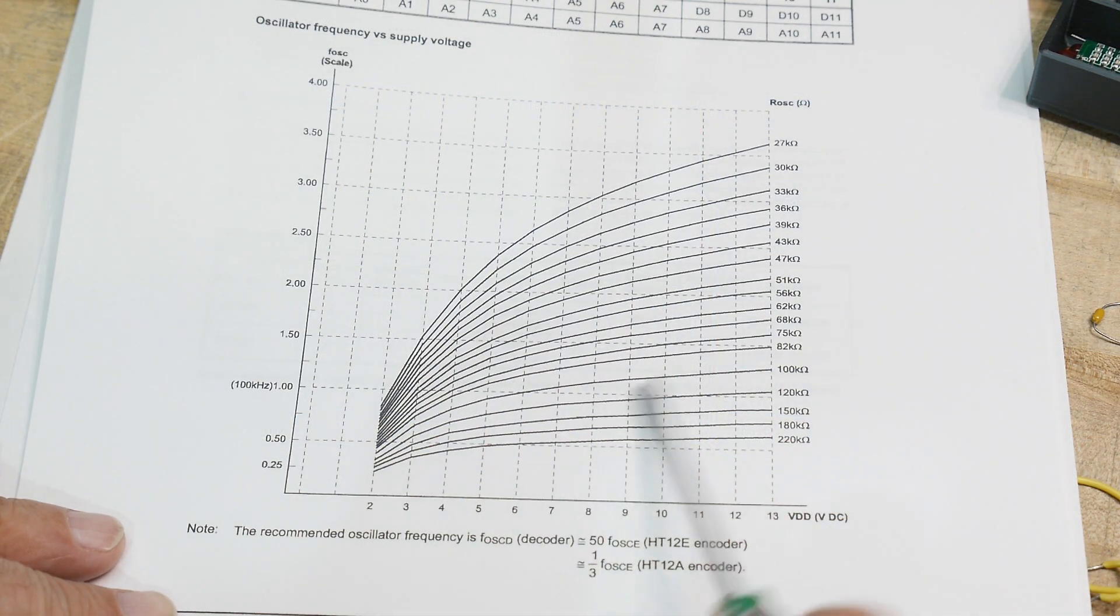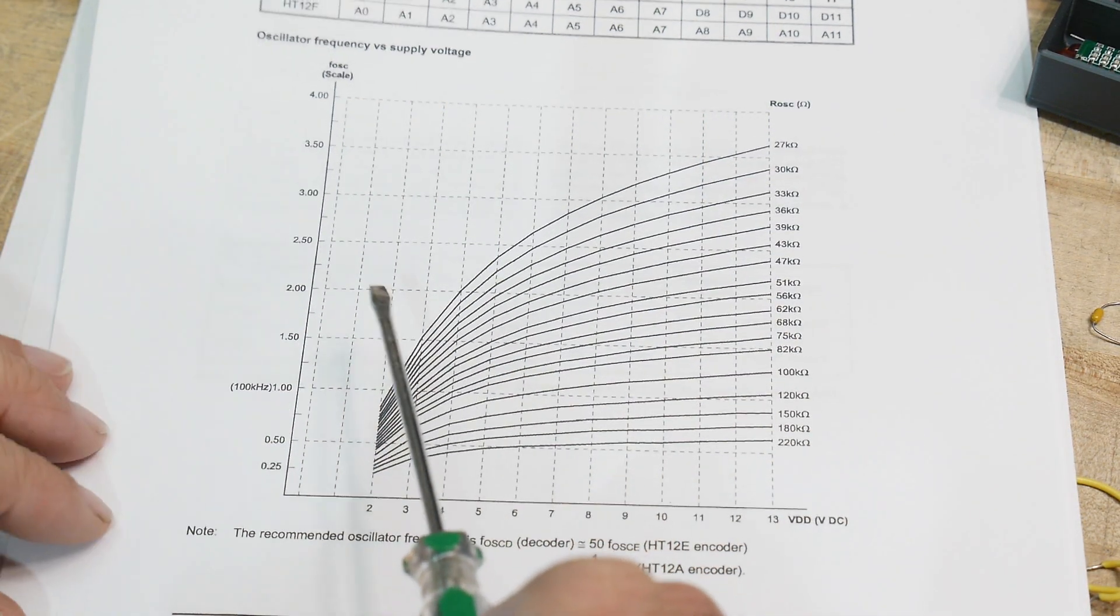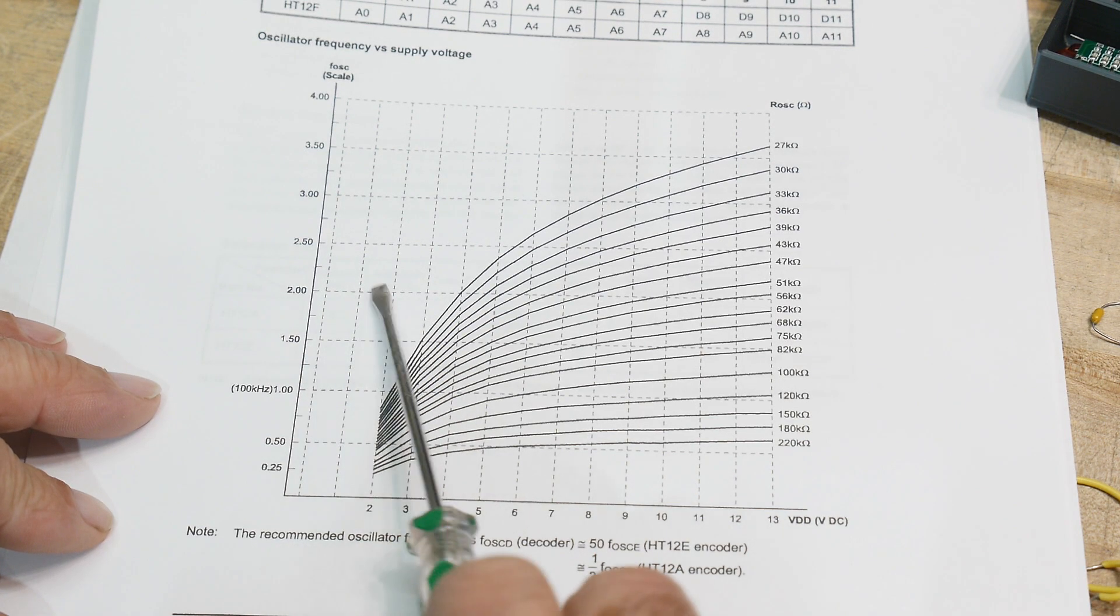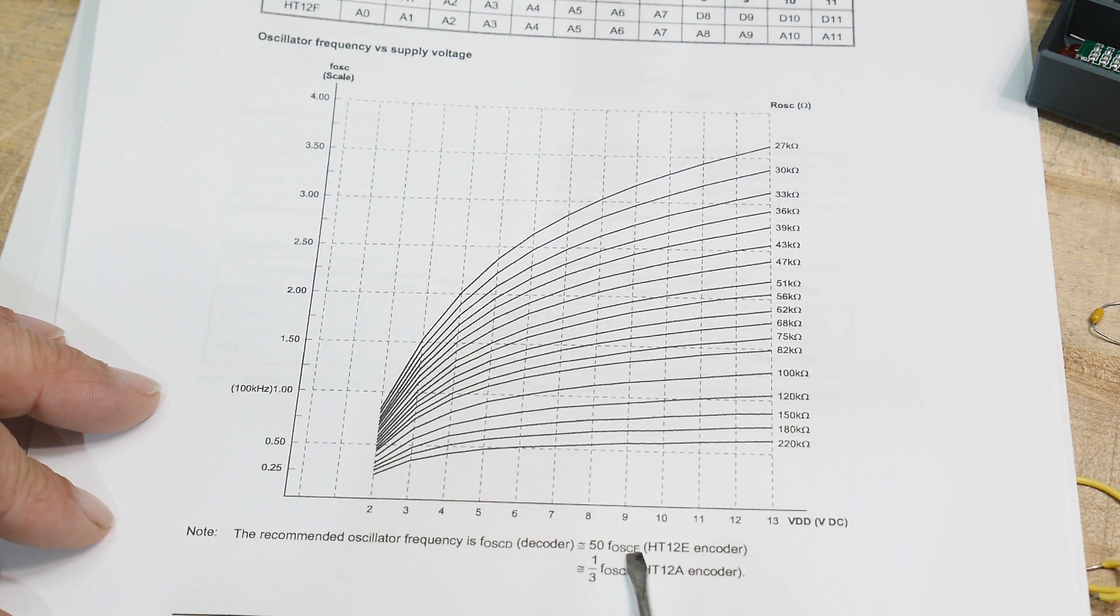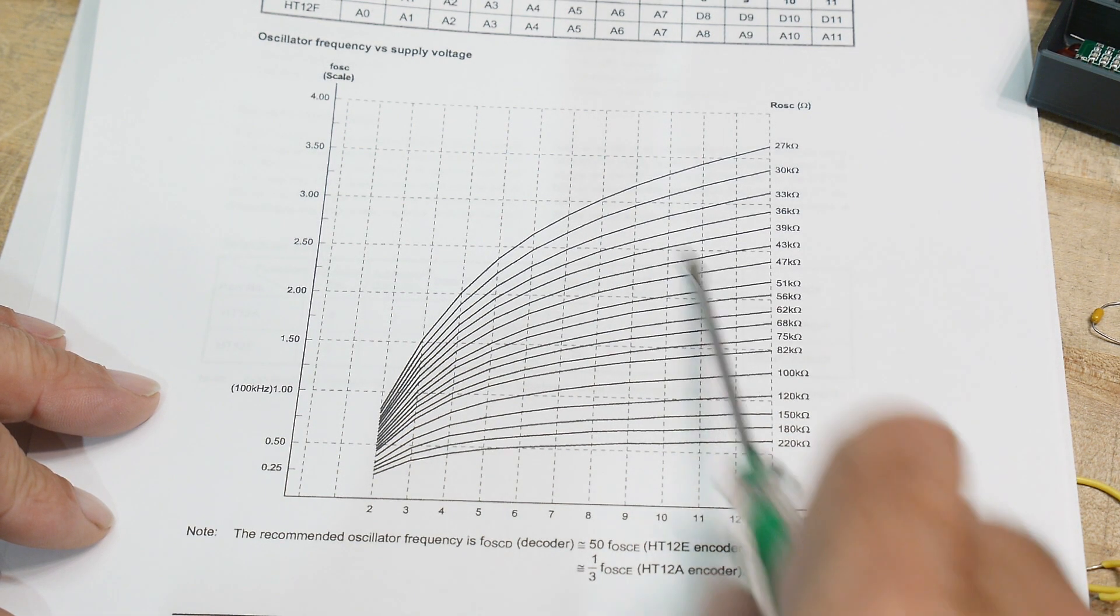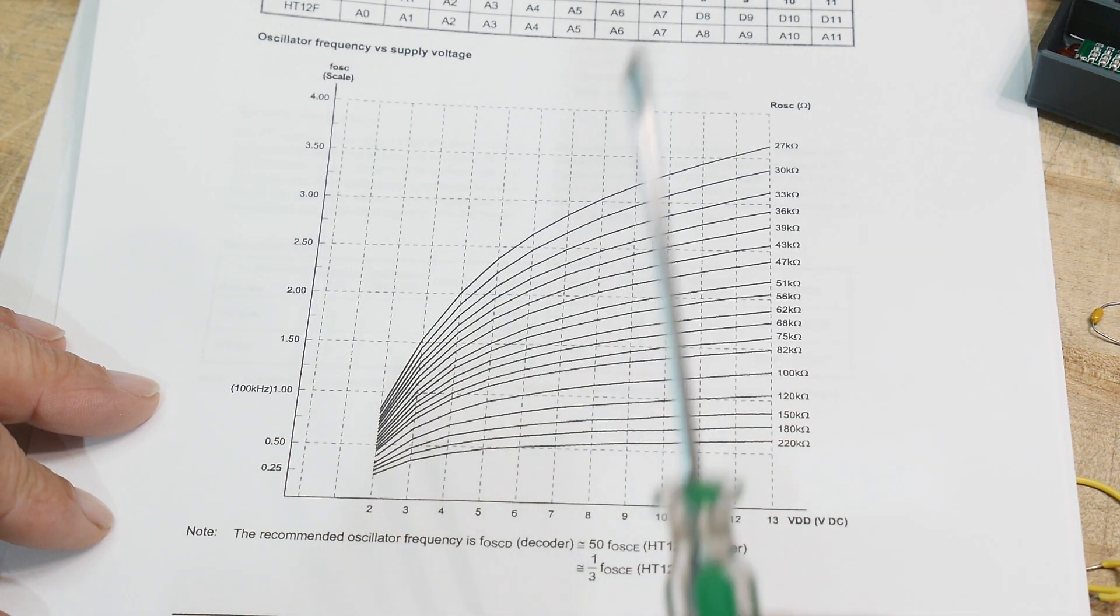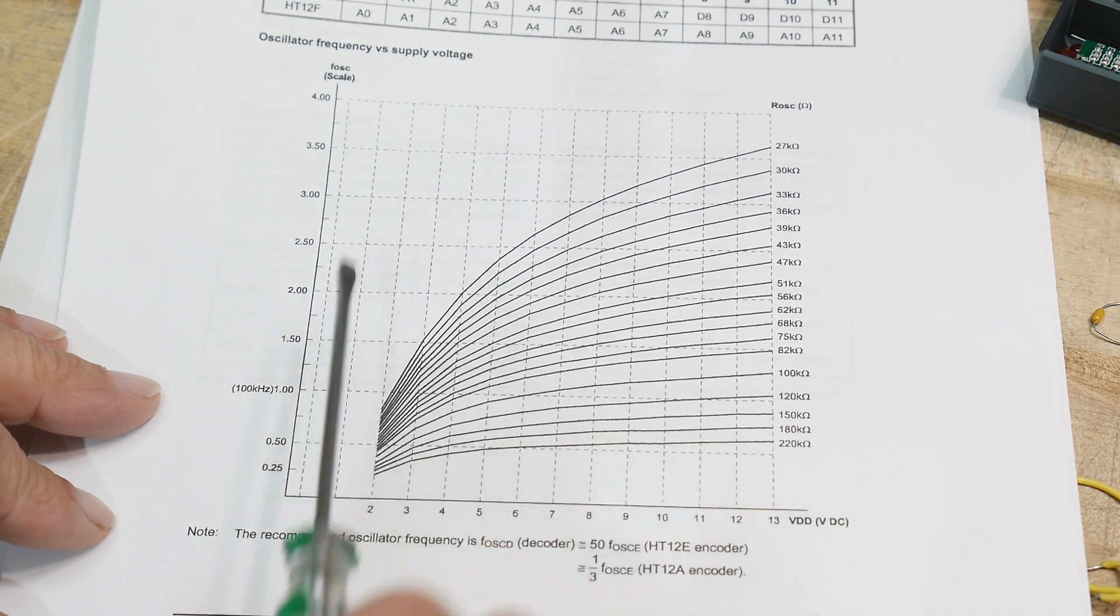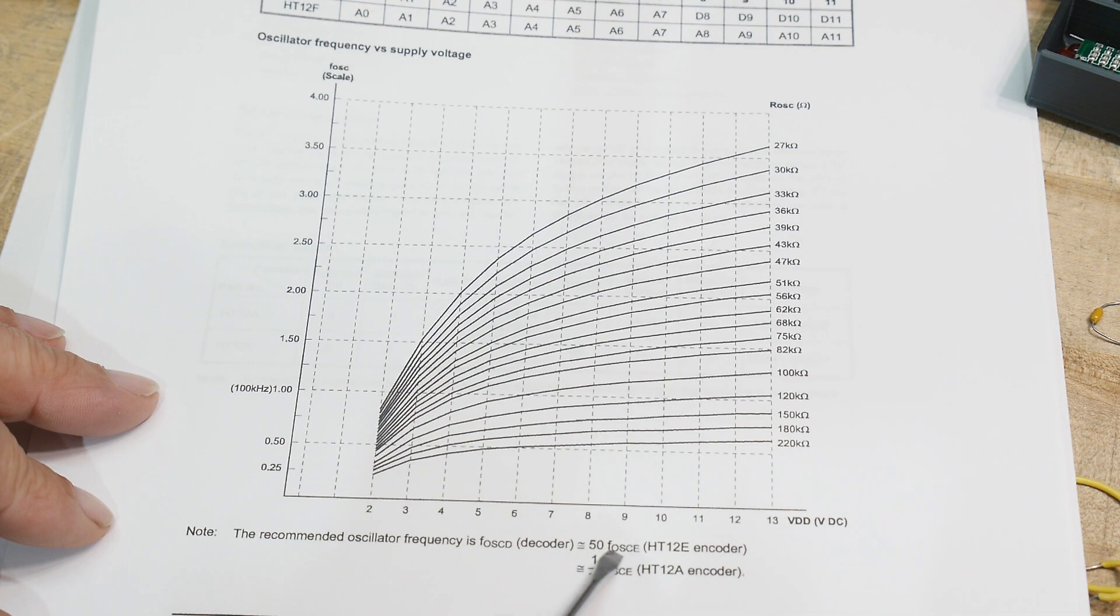So the speed at which this thing is operating, I have this one set up to around 1.2 kilohertz for the encoding. The decoding, it says you should be 50 times faster than the encoding. So the clock speed of the decoder is much, much faster than the clock speed of the encoder. And so it says that about you should be about 50 times.